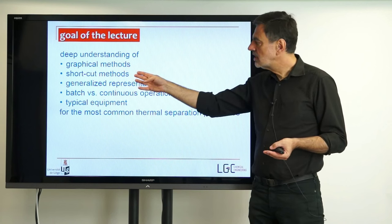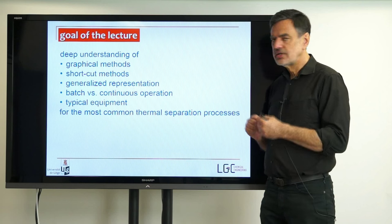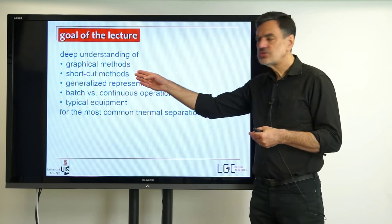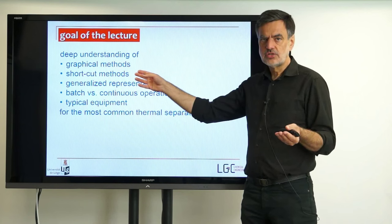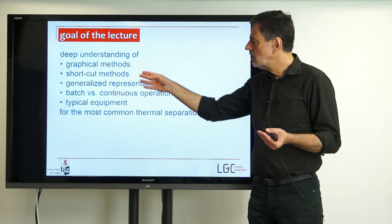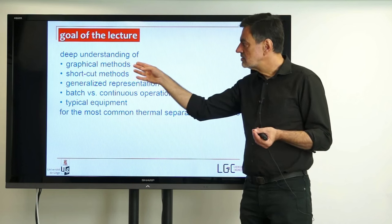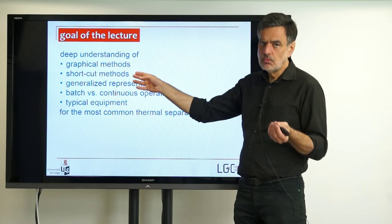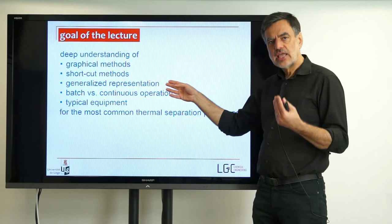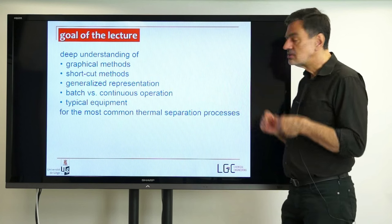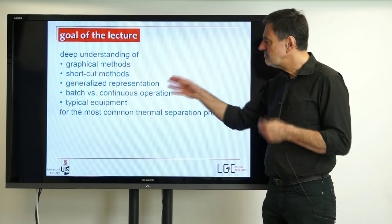The extreme is shortcut methods — analytical methods pushed to the extreme by assuming ideal equilibrium. This leads to closed equations solvable even on a calculator to determine the number of theoretical stages needed to perform a specified separation task. They are used to get a first idea of how complicated the separation is; they are much less accurate than graphical methods but they are quick, easy, and fast. Based on these, a generalized representation of stage processes will be derived, applicable to different separation processes, which is very general and easy to apply.